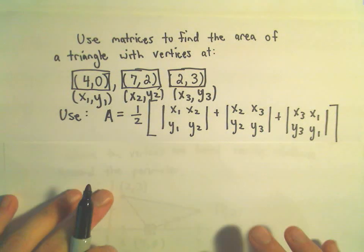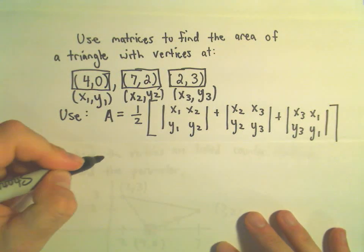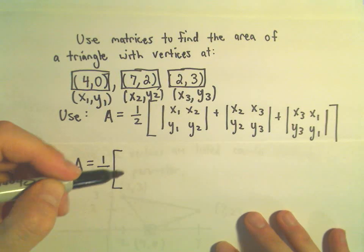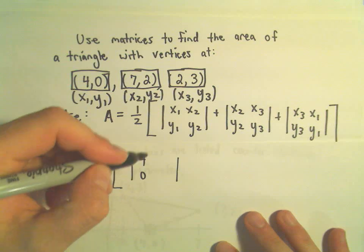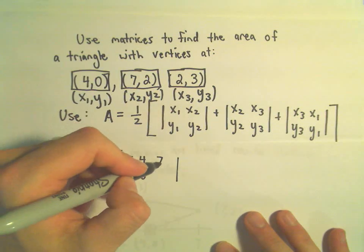So at this point we just have to fill in this formula, and then compute the determinants and add them together, and multiply by one half. So let's see, x₁,y₁, that was 4,0, x₂,y₂ is 7,2.